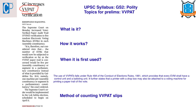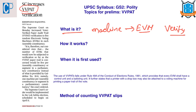VVPAT stands for Voter Verified Paper Audit Trail system. This is a machine attached to the Electronic Voting Machine. It allows the voter to verify if they have voted for the person they intended to vote for. When the voter casts their vote on the EVM by pressing the button, the VVPAT machine generates a paper slip containing the name of the candidate.